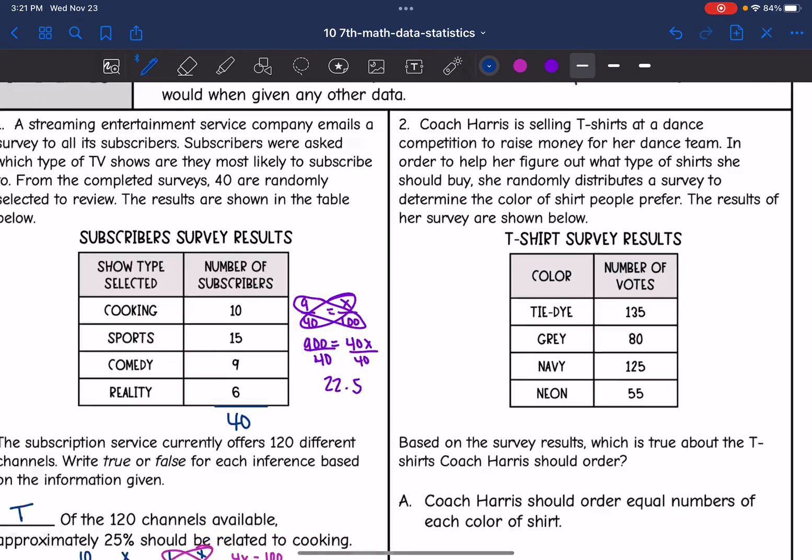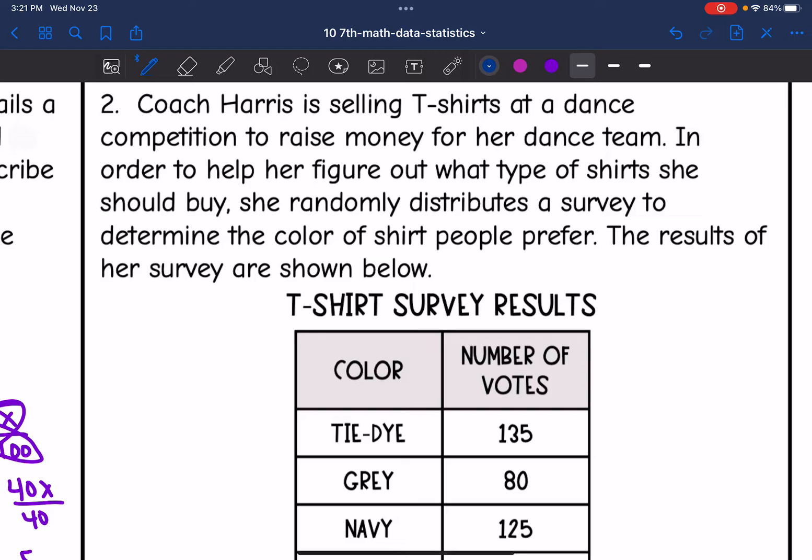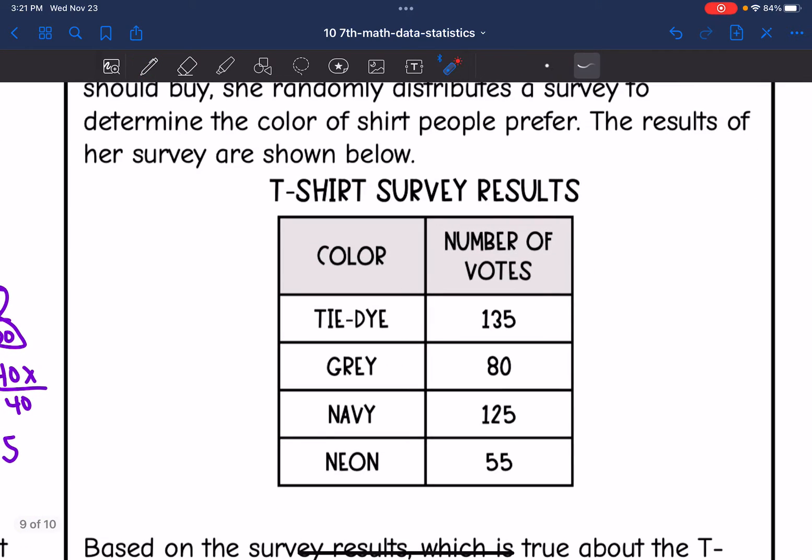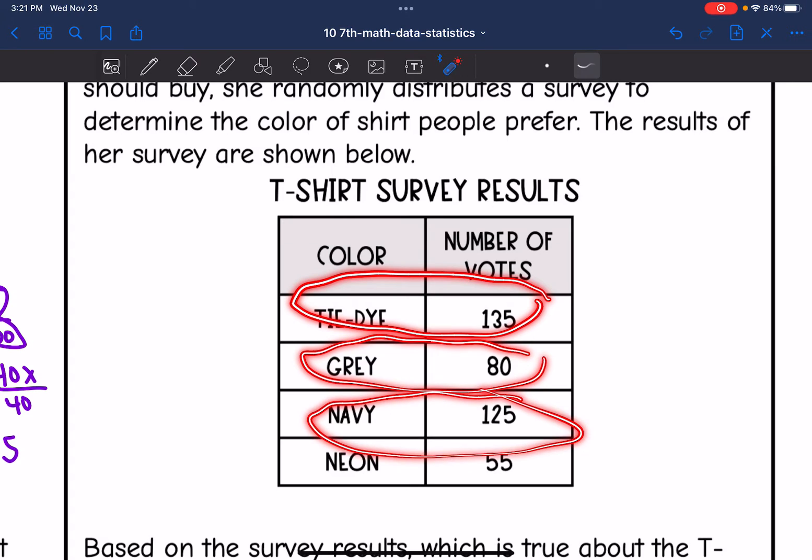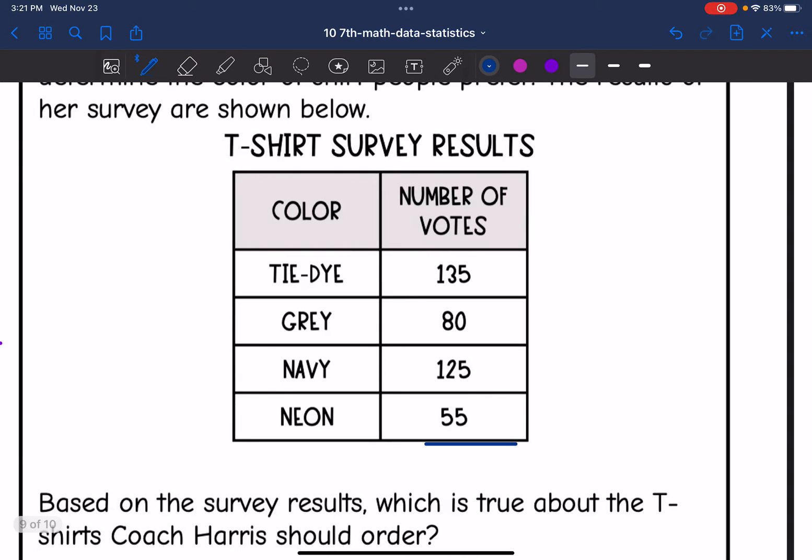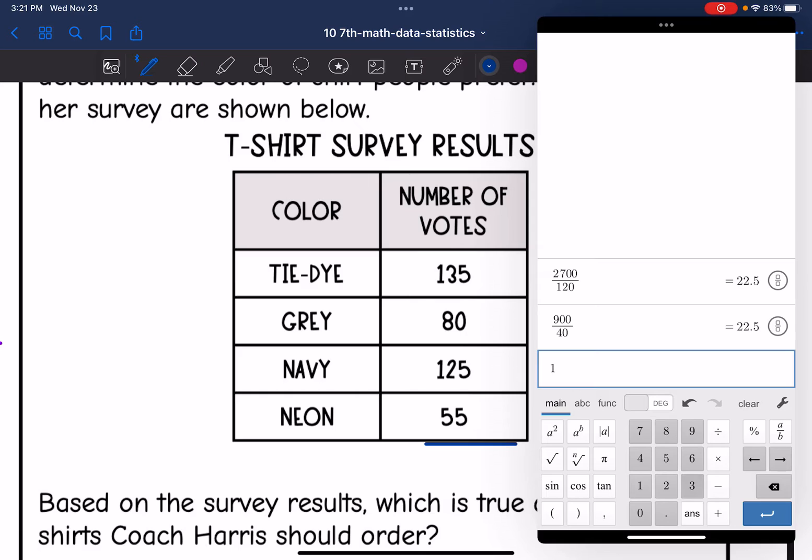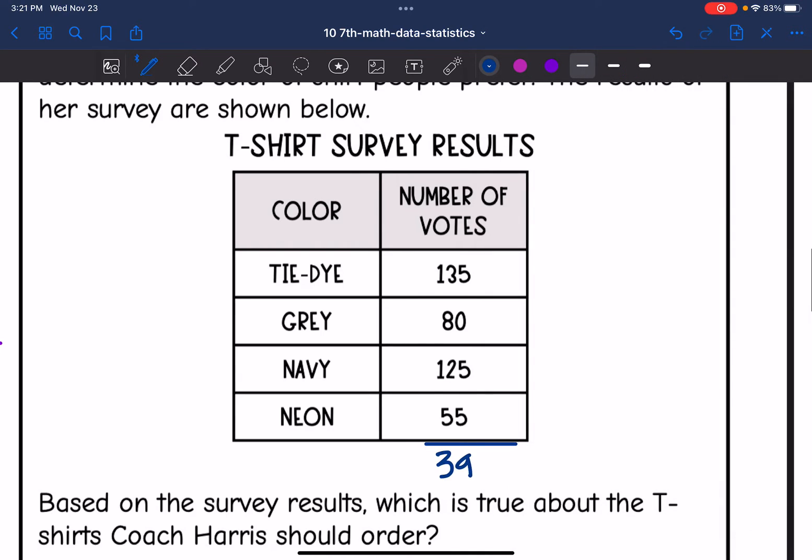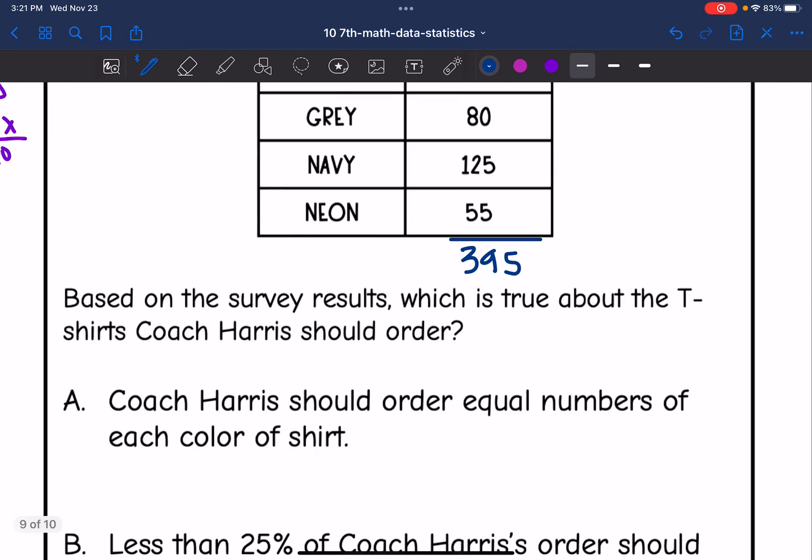Okay, let's look at number 2. It says Coach Harris is selling t-shirts at a dance competition to raise money for her dance team. In order to help her figure out what type of shirts she should buy, she randomly distributes a survey to determine the color of shirt people prefer. The results of her survey are shown. So 135 went tie-dye, 80 went gray, 125 went navy, and then 55 went neon. I'm going to go ahead and figure out the total here by adding these four numbers together. So 135 plus 80 plus 125 plus 55 is 395. So she surveyed 395 people. And then it says, based on the survey results, which is true about the t-shirts Coach Harris should order?